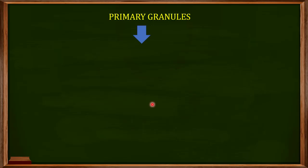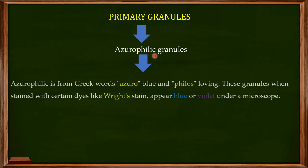The primary granules are also known as the azurophilic granules because when you stain them with a specific dye like the Wright stain they are going to appear blue or violet under a microscope. As they love this blue color they are known as the azurophilic granules.